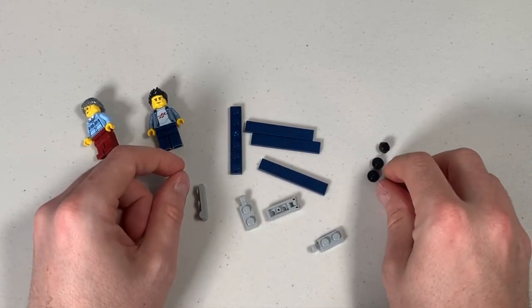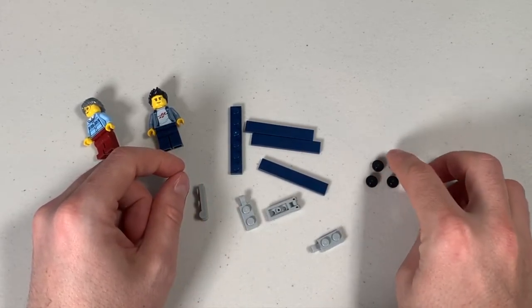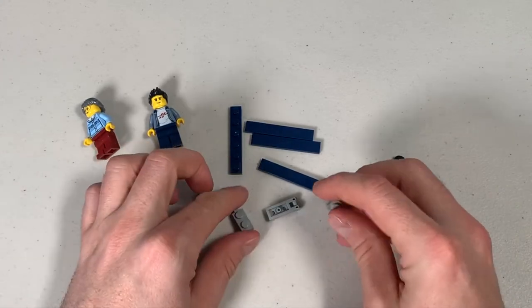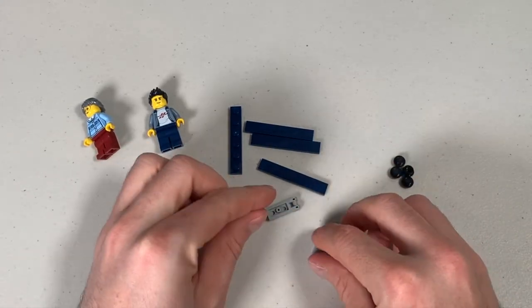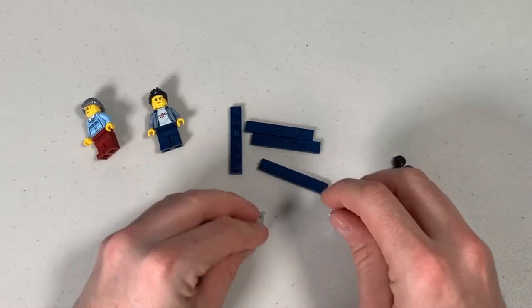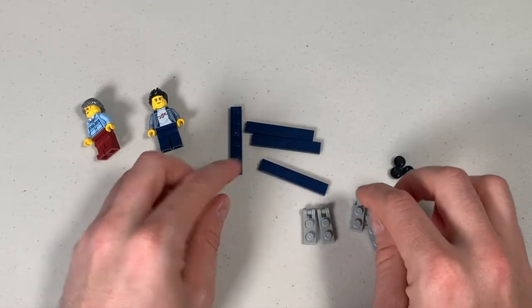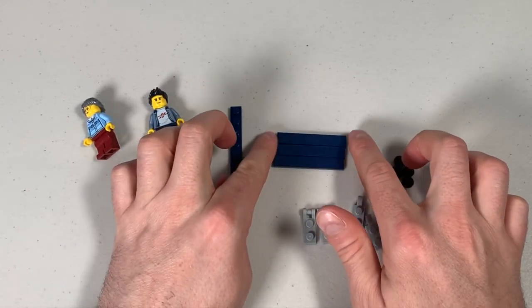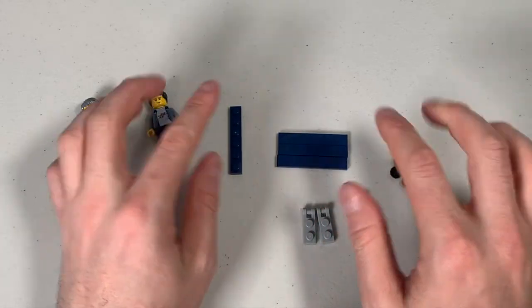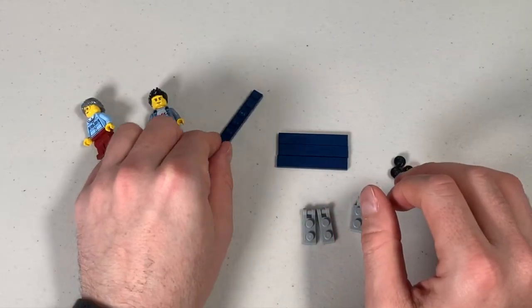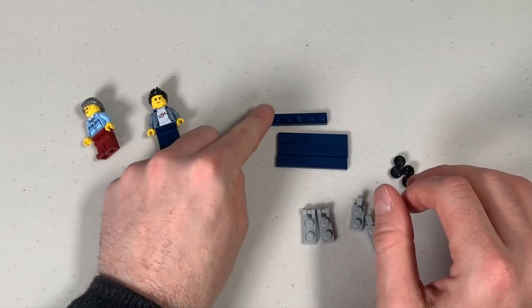Now let's look at the pieces. We've got these 1x1 black studs, four of those. We've got these 2x1 modified plates and these 2x1 modified plates, as well as three 1x6 tiles. That could be in any colour and in the same colour a 1x6 plate.